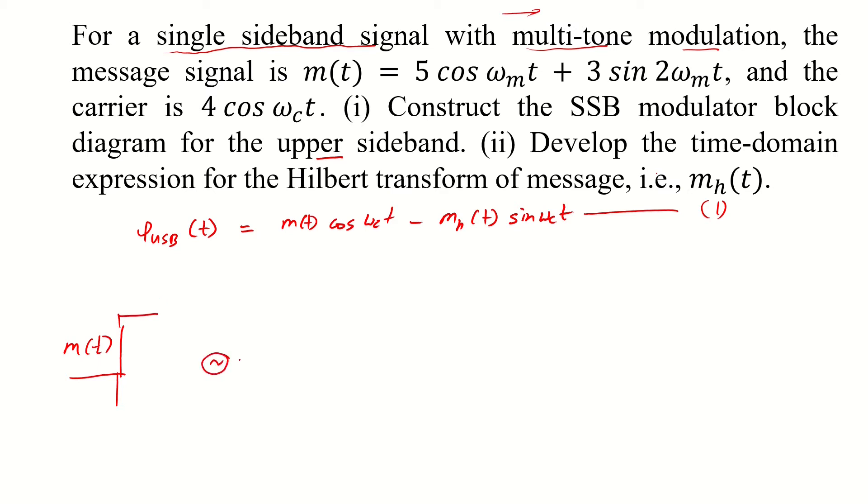So over here we have a local oscillator cos omega ct. We take a thread from here and we plug it into a multiplier or a modulator. So in the upper in-phase branch we have m of t cos omega ct.